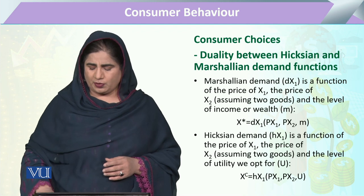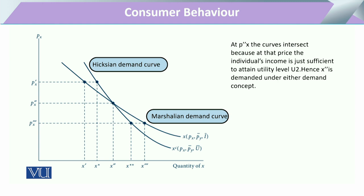We have different equations for both the Marshallian and Hicksian demand curves. When we explain this from a graphical presentation, we can see that on the X-axis we have the quantity of commodity X, and on the Y-axis we have its price. The change in price has a certain impact on the quantity demanded. The Marshallian demand curve is explained through three points of quantity demanded, with point 1 as our initial point.